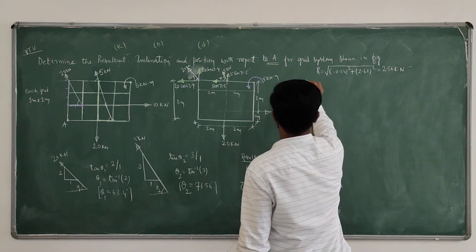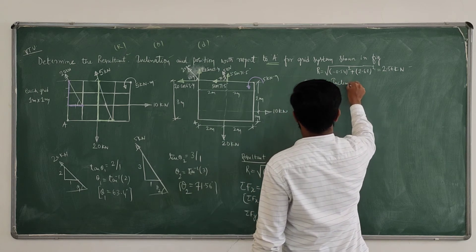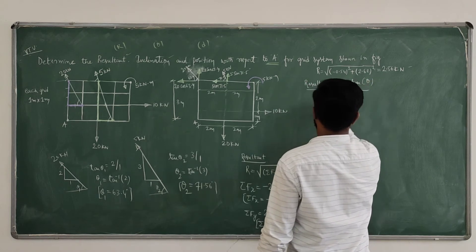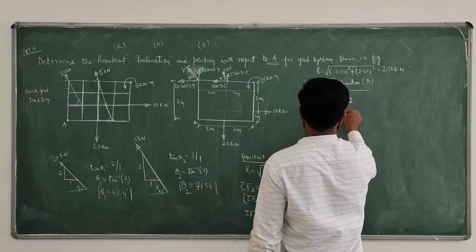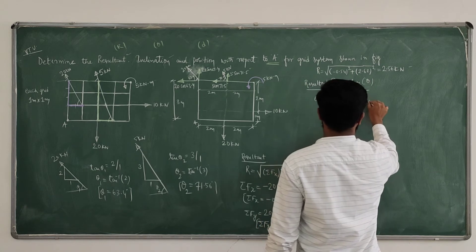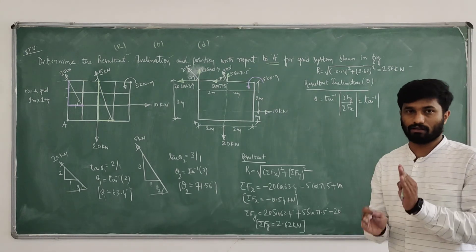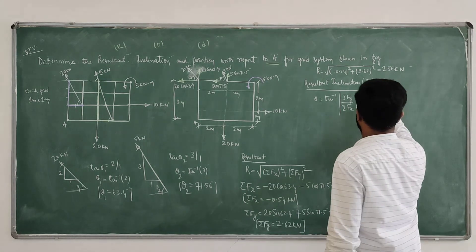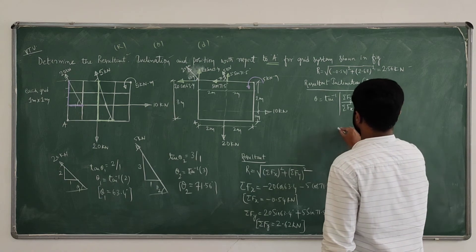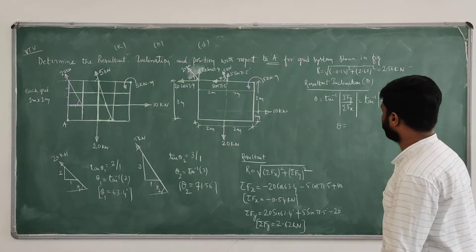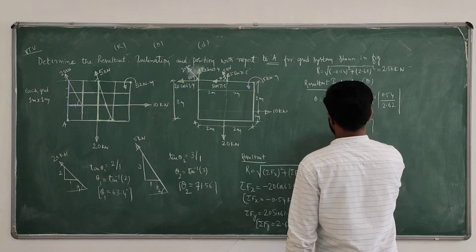Next, compute resultant inclination theta. Theta = tan⁻¹(|ΣFy| / |ΣFx|). If you have a negative value, just take the positive value and measure the angle in the clockwise direction. So theta = tan⁻¹(0.54 / 2.62) = 78.35 degrees. This is the inclination.